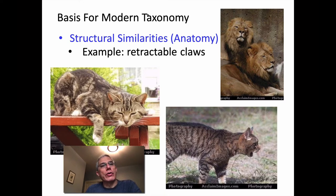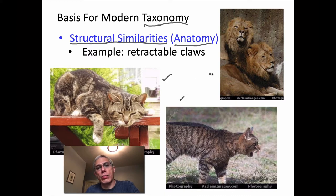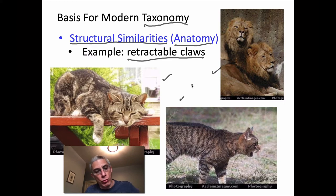The basis for modern taxonomy — and remember taxonomy is that whole discipline of classification — is to look at different ways we can group organisms. The first thing we might do is look at structural similarities, in other words the anatomy of the organisms we're comparing. If we had three different cats, one thing we would notice is that all three have retractable claws, and that characteristic would help us group them into one classification group, even though the lion looks very different from the other cats.